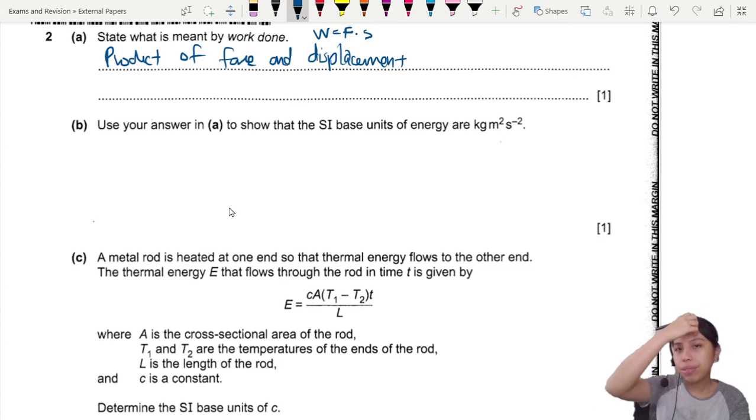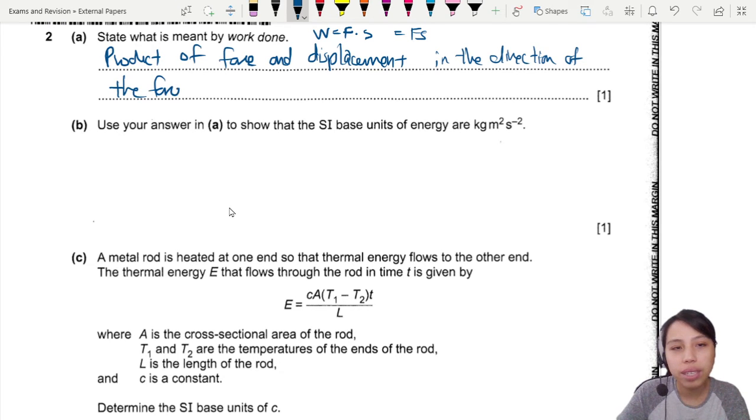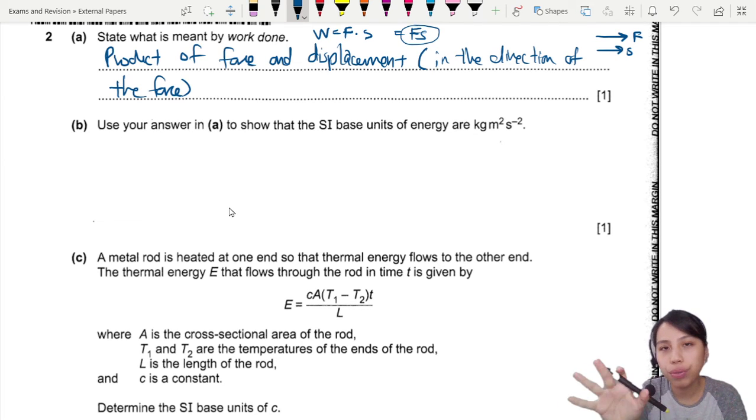But to be safe, sometimes certain mark schemes will ask you to also include the direction. So if we want to use our usual Fs, product of force and displacement in the direction of the force. So that's a little extra detail here to add on to show that when we say Fs, we assume that F and S is in the same direction. Or you have resolved the force or displacement to be in the same direction. Okay, so there's usually one mark.